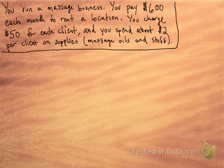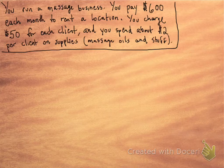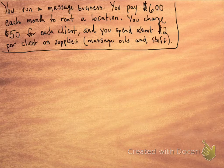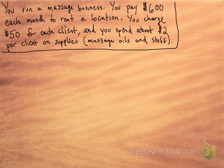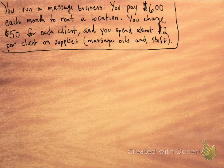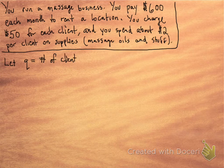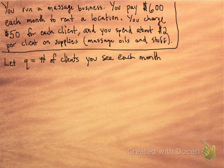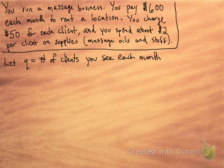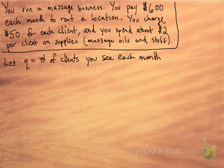Let's take a look at an example. Let's pretend you own a massage business and you pay $600 each month for rent. You charge each client $50, and you spend about $2 per client on supplies—massage oils and other stuff. So Q is going to be the number of clients that you see each month. Q is the quantity, but in this case, it's the number of clients.